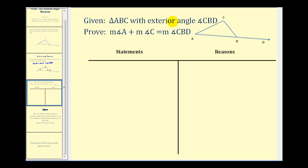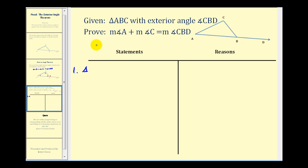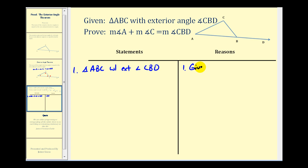We are given triangle ABC with exterior angle CBD. We want to prove the measure of angle A plus the measure of angle C is equal to the measure of angle CBD. Let's take the given: we have triangle ABC with exterior angle CBD. Now let's go ahead and give the equation for the sum of the interior angles.